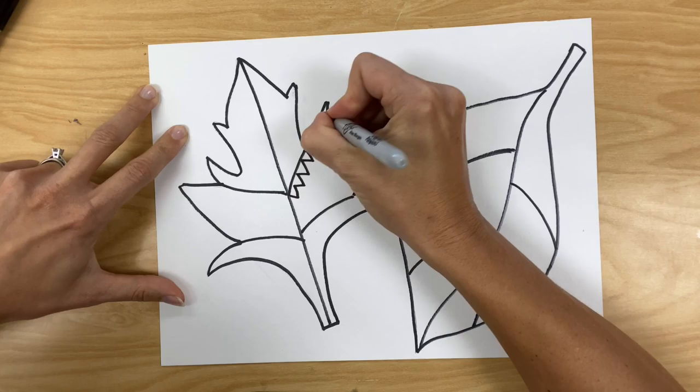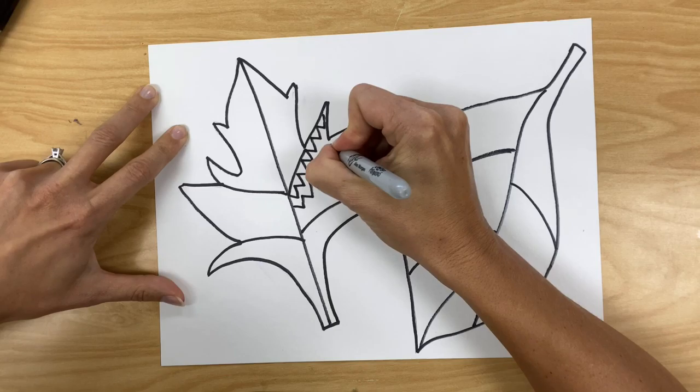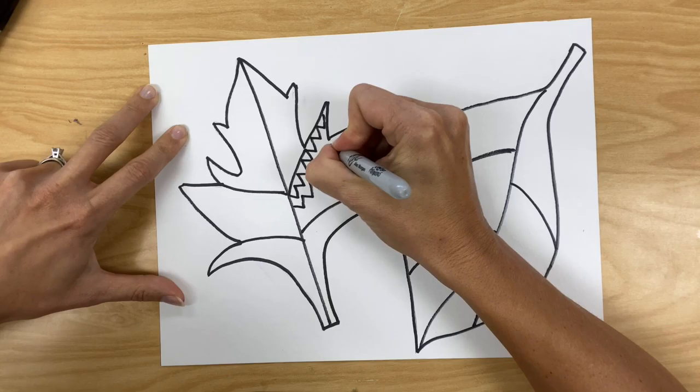Zigzag lines, wavy lines, swirly lines, dash lines, castle lines, diagonal lines, I could go on and on and on.